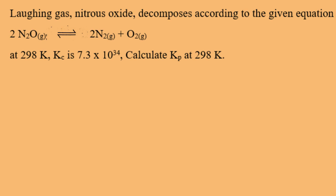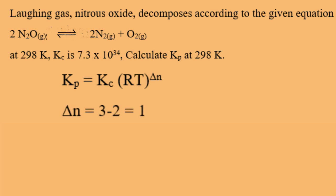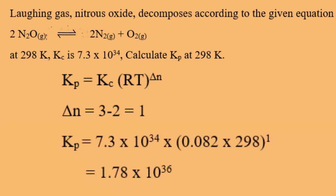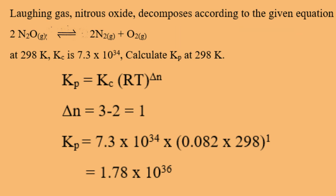Laughing gas — nitrous oxide — decomposes according to the equation: 2N2O → 2N2 + O2 at 298 Kelvin. Kc is 7.3 × 10^34. Calculate Kp at 298 Kelvin. We will use the relation Kp = Kc × (RT)^ΔN, where ΔN is the number of moles of products minus number of moles of reactants. Here there are 3 moles of products and 2 moles of reactants, so ΔN = 3 − 2 = 1. On substituting the values, using R = 0.082 L·atm/mol·K, Kp equals 1.78 × 10^36.